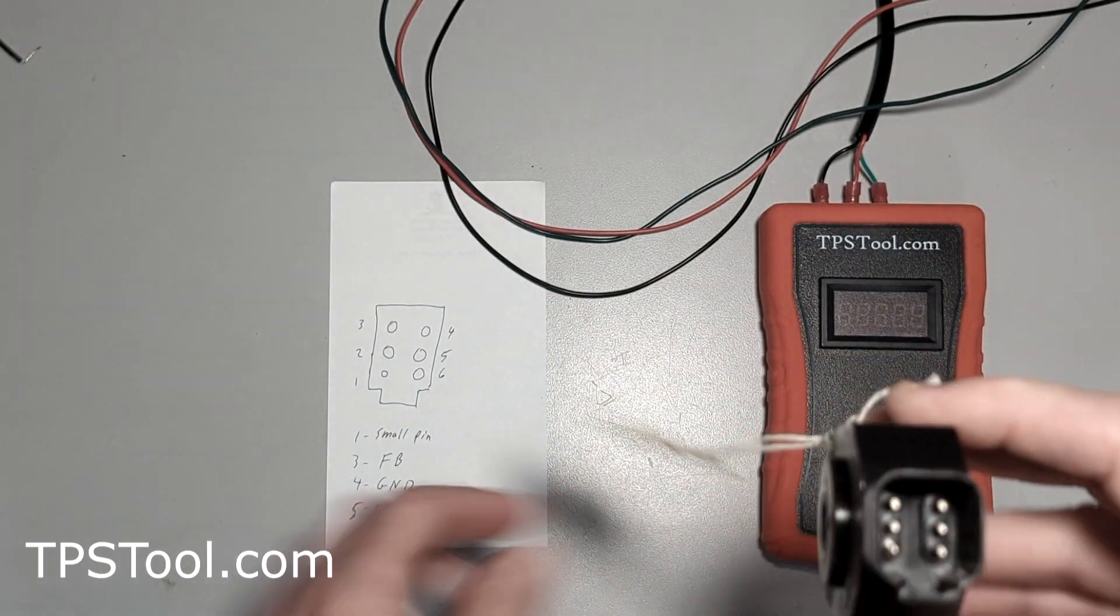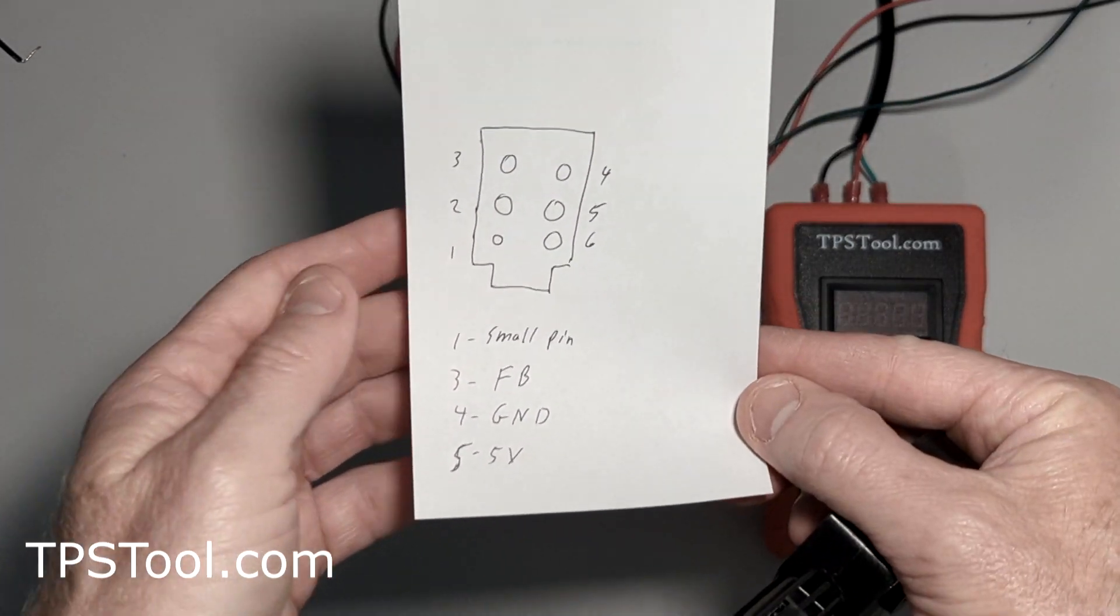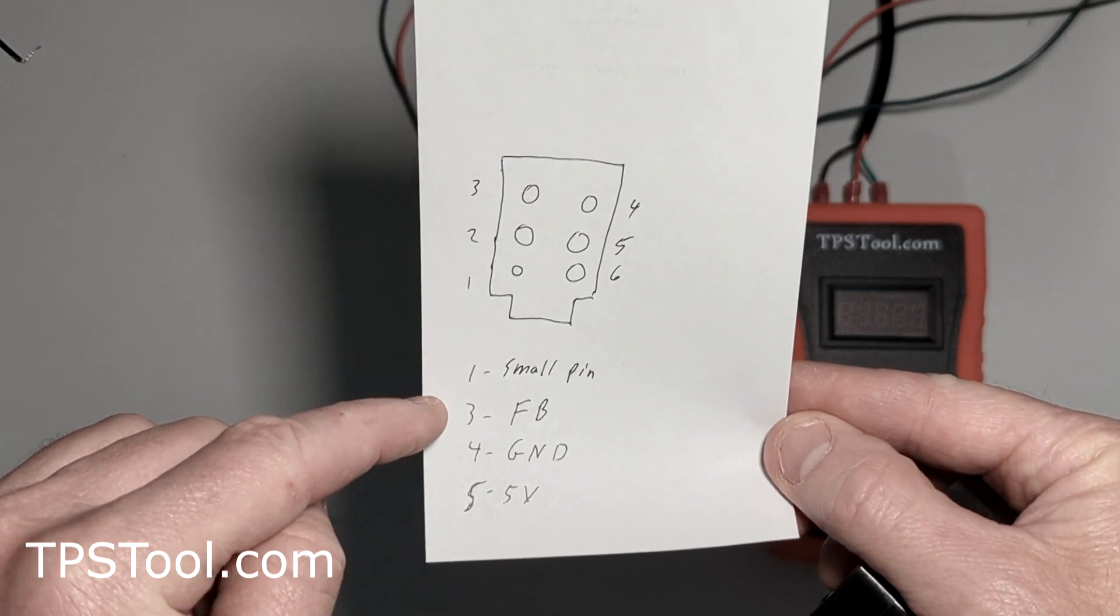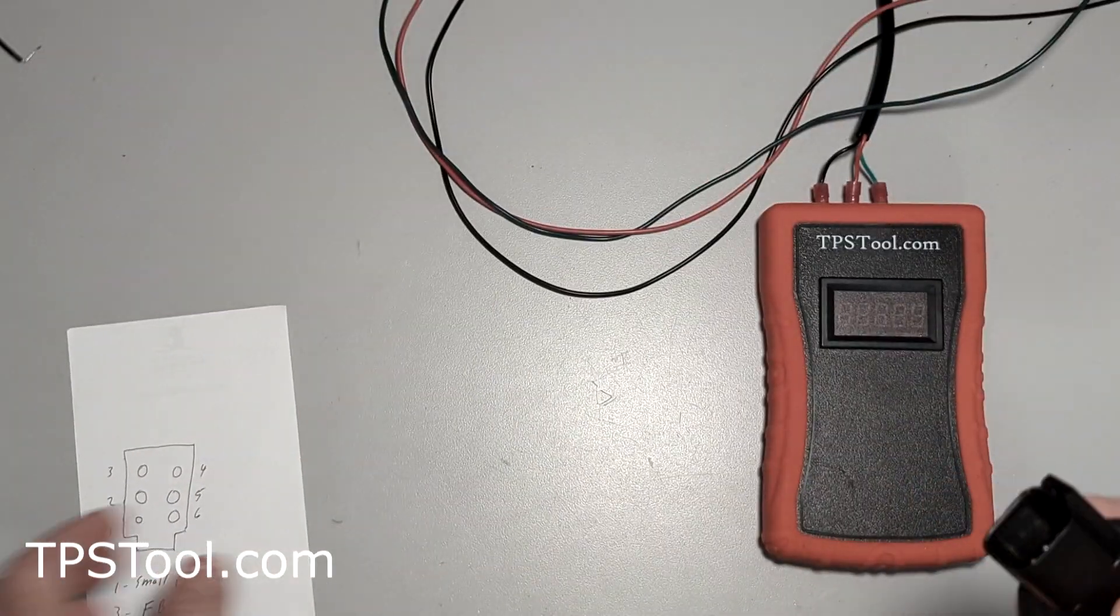Here's our schematic for what we're going to do. Pin one is the small pin. We're going to connect the feedback to pin three, ground to pin four, and five volts to pin five. I'll show you what that looks like.